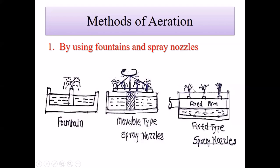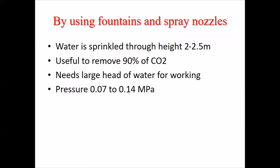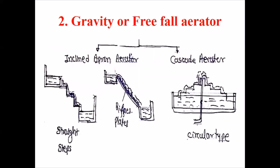Water flows to the atmosphere using the nozzle. By using fountain and spray nozzle, water is sprinkled from a height of 2.2 to 5 meters, which is useful to remove 90 percent of CO2 gases. It needs a large head of water, with working pressure of 0.07 to 0.14 MPa.